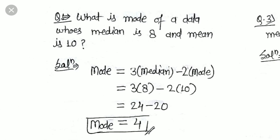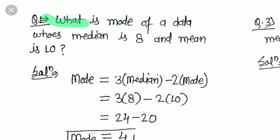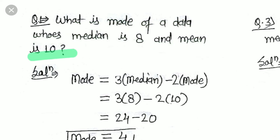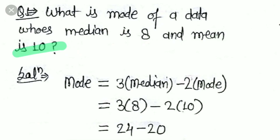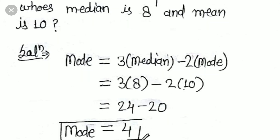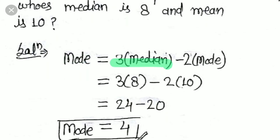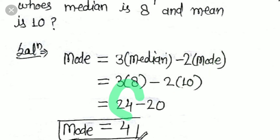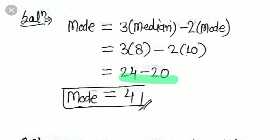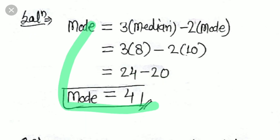Now let's solve some questions. First: what is the mode of a data whose median is 8 and mean is 10? Using the formula Mode = 3 × Median − 2 × Mean: Mode = 3 × 8 − 2 × 10 = 24 − 20 = 4. So the mode is 4.